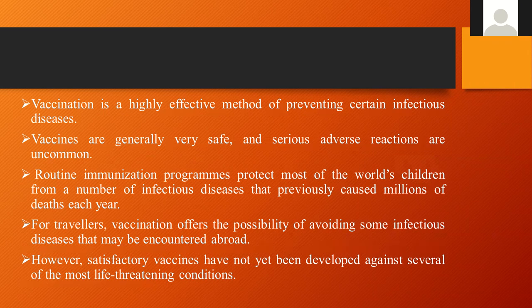Serious adverse reactions are very uncommon when we administer a vaccine — they are relatively safe. Routine immunization programs will protect most of the world's children from a number of infectious diseases that previously caused millions of deaths each year. After vaccination, it reduces the morbidity and the mortality in both children and adult populations. Another important aspect is for travelers — vaccination can offer the possibility of avoiding some infectious diseases that might be encountered.